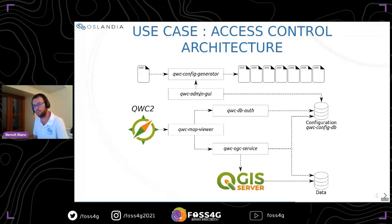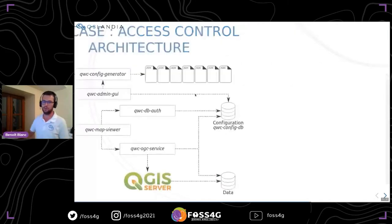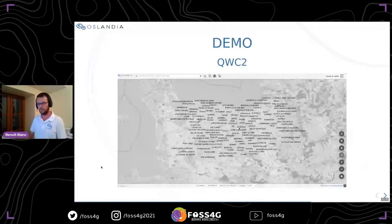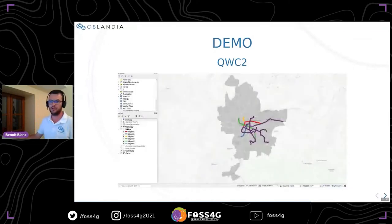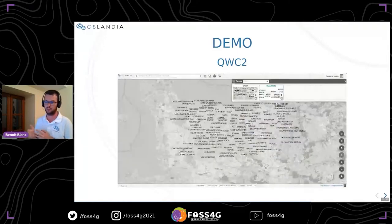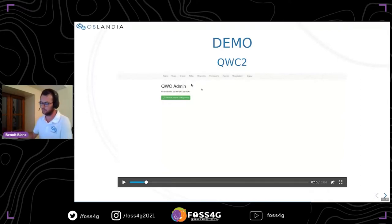Now I can show you how it works in this video. I have my application with already two projects in it, and I have configured a new project in QGIS desktop that I want to add to my application. To do so, I have to go to the administration panel — I need the administration role. Then I go to the Thames tab, where I can see all the projects already available in my application. I can modify or delete some of them.